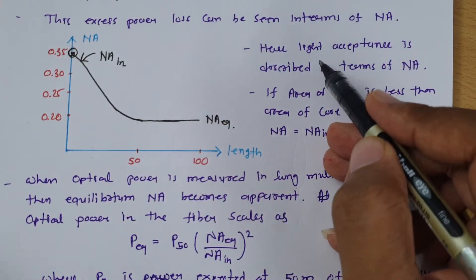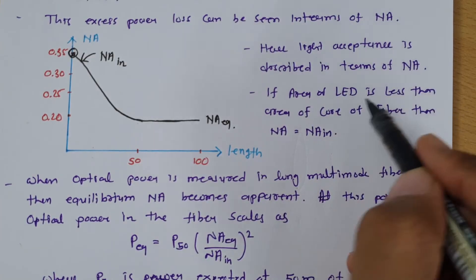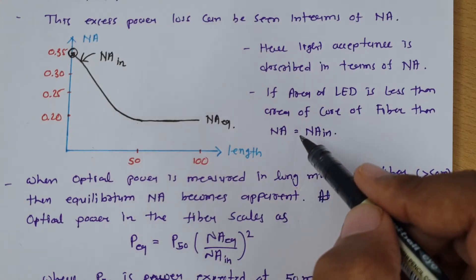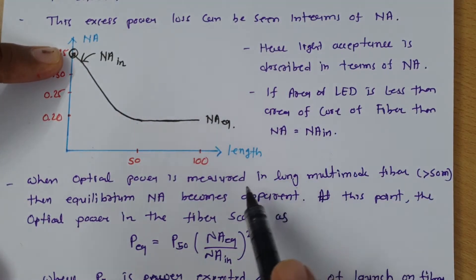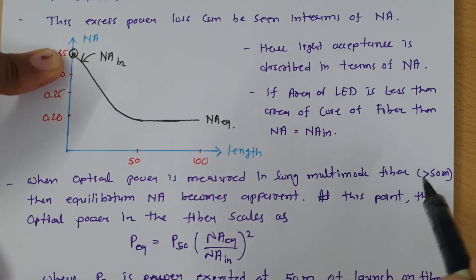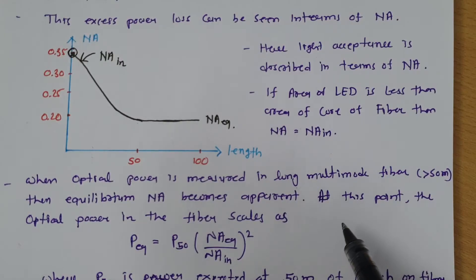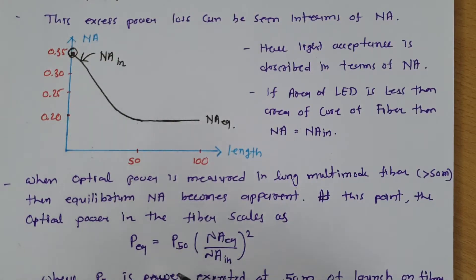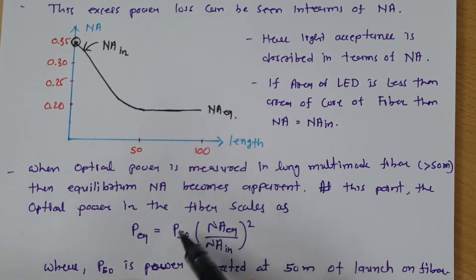Light acceptance is described in terms of numerical aperture. If the area of LED is less than the area of core, then numerical aperture equals the input numerical aperture. When optical power is measured in a long multimode fiber at a distance greater than 50 meters, you get the equilibrium numerical aperture. The equilibrium optical power equals P50 multiplied by the ratio of equilibrium numerical aperture to input numerical aperture, squared. Where P50 is the power at 50 meters of launch of the fiber.